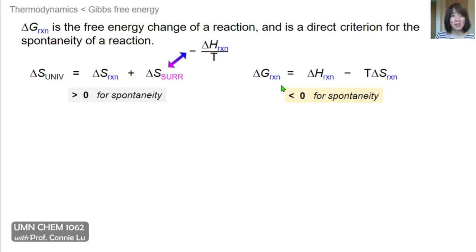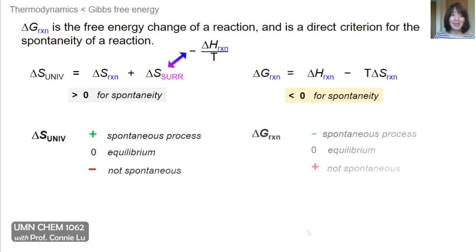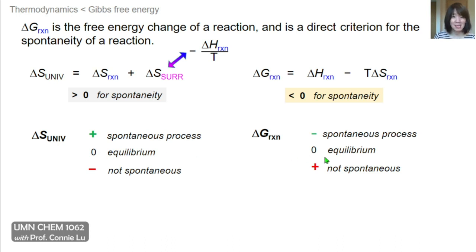What's really useful about this equation is that now everything is in terms of the system or the reaction. The condition for spontaneity is that the delta G of the reaction must be less than zero. For delta S of the universe, it was important for that change to be positive. But for delta G of the reaction, a spontaneous process has a negative sign. When these values equal zero, that means no change occurs, and the reaction is at equilibrium.